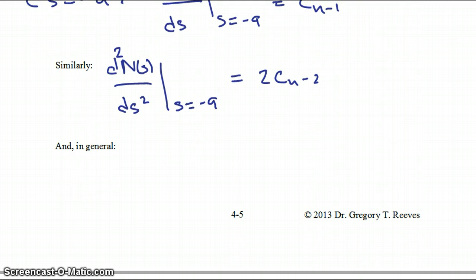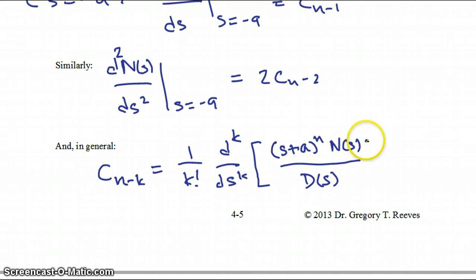And, in general, if you want to know the value of your coefficient cn minus k, that's equal to 1 over k factorial times the kth derivative with respect to s of s plus a to the n times your numerator divided by your denominator, all evaluated at the point s equal to minus a.